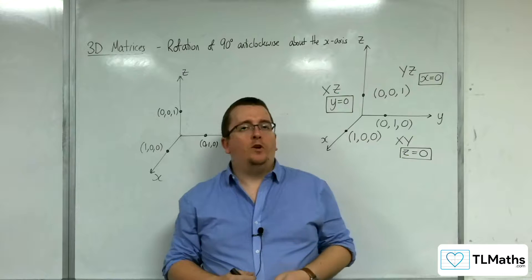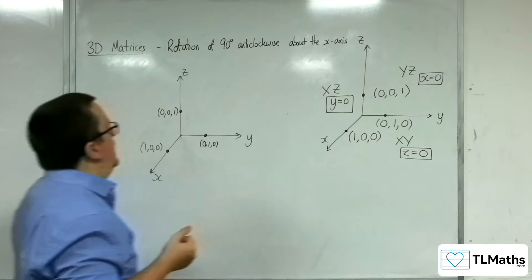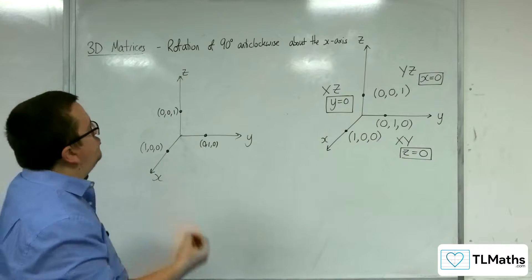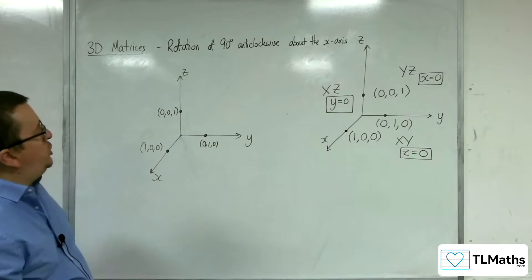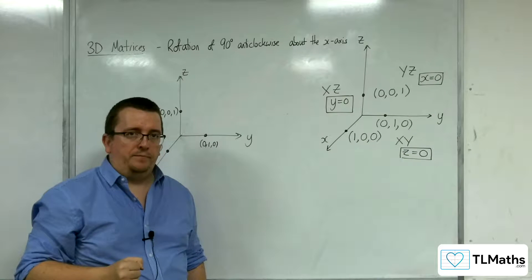So, in this video, we're going to start to look at rotations with 3 by 3 matrices. We're going to try and describe the matrix that is a rotation of 90 degrees anticlockwise about the x-axis.